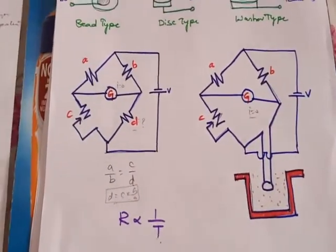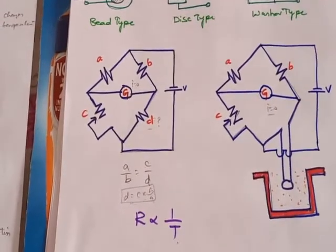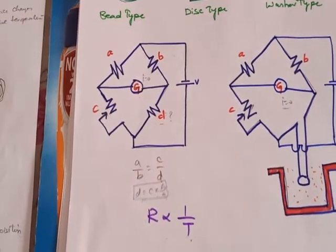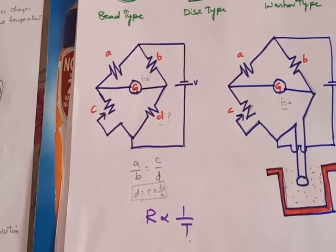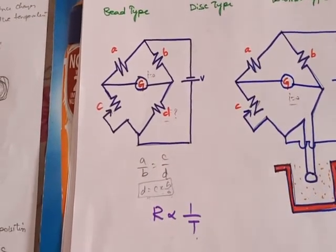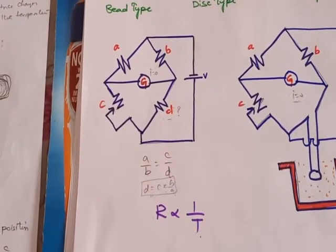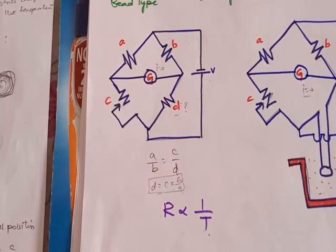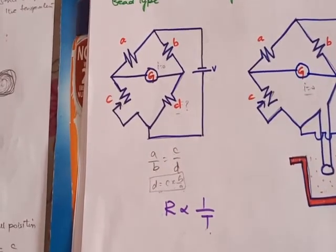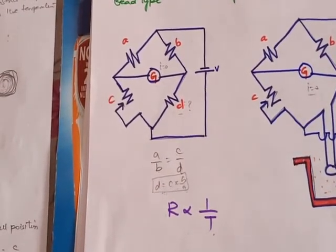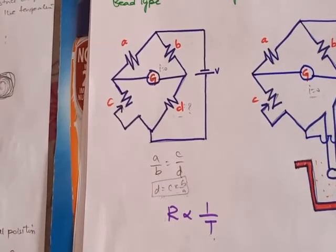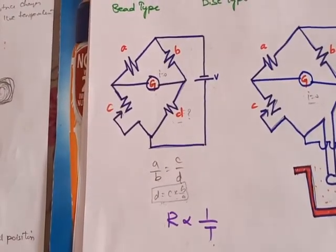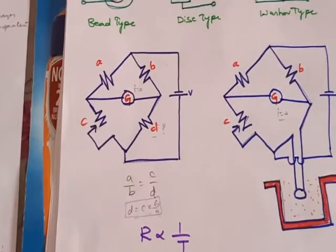Coming to the applications, thermistors have good sensitivity, thermal conductivity can also be found, and pressure for flowing fluids can also be measured. Coming to the advantages: the structure is very small, the cost is also very low, and the accuracy is also high. These are the applications and advantages of thermistor thermometers.